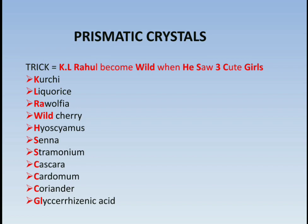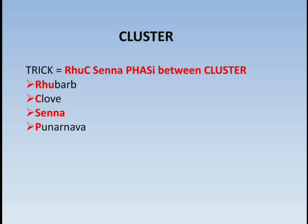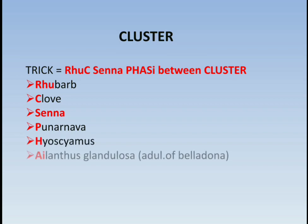I hope that is a very easy trick. The next is cluster crystals. The trick is 'Ruksana fasi between cluster.' The drugs which show cluster crystals: Ru means rhubarb, C denotes clove, senna — as its name denotes senna. Fasi: P denotes punarnava, H denotes hyoscyamus, E denotes Ailanthus glandulosa — that is an adulteration of belladonna, S denotes stramonium.